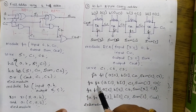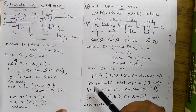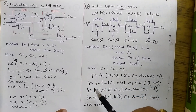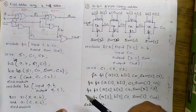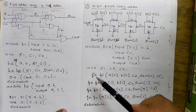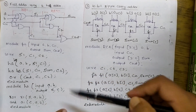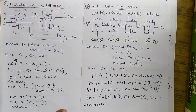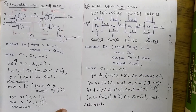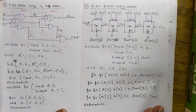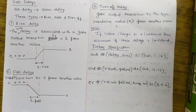If you write only this part of the code in an EDA tool like Xilinx, it will give an error saying FA is an undefined module. To overcome this, you need to include the full adder code — either the original or written in dataflow modeling style. This completes the 4-bit ripple carry adder.